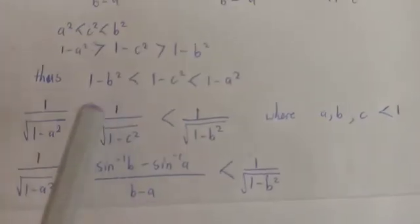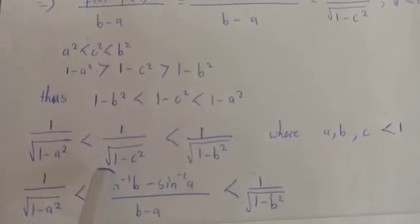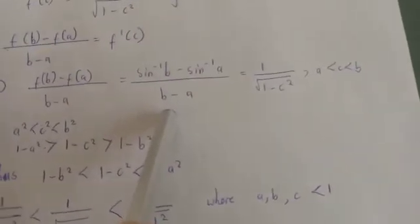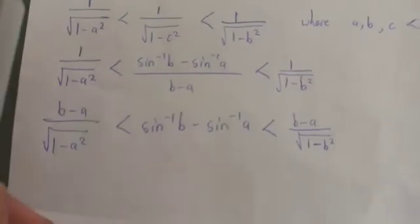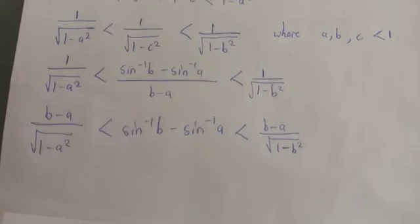We already established that 1/√(1−c²) equals [arcsin(b) − arcsin(a)] / (b−a). Substituting this in and then multiplying both sides by (b−a), we arrive at exactly what we wanted to prove.